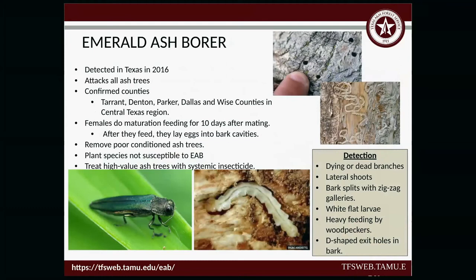Emerald ash borer — first detected in Texas in 2016. It attacks all ash species. In this area it's confirmed in Tarrant, Denton, Parker, Dallas, and Wise counties. We added four of those this year — it started in Tarrant in 2016 and we added Denton, Parker, Dallas, and Wise all this year. Females do a maturation feeding for 10 days after mating. After they feed, they lay the eggs into the bark cavities, and then the larvae, once it hatches, will bore in.